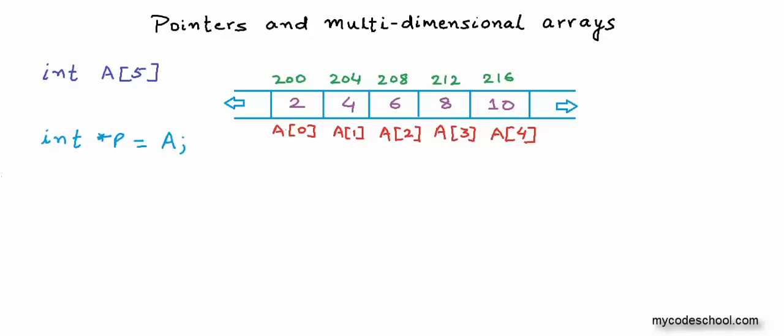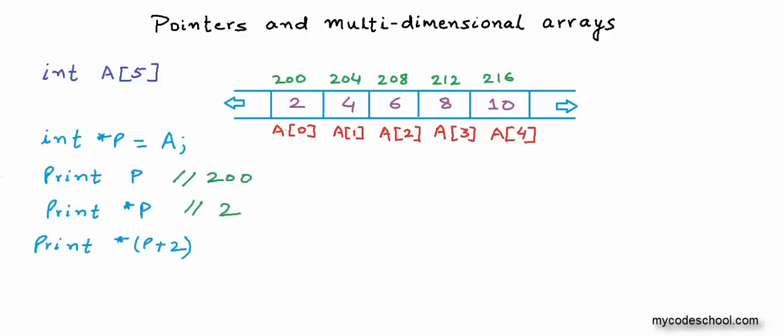Once I write a statement like 'int *p = a', I can use pointer arithmetic and dereferencing to access all elements in the array. Printing just p gives output 200. Dereferencing p gives output 2. Printing *(p+2) gives output 6. Because we have an integer pointer, adding 1 takes us to the address of the next integer — 4 bytes ahead. Adding 2 takes us 8 bytes ahead. So p+2 will be 208, and *(p+2) will be value 6.